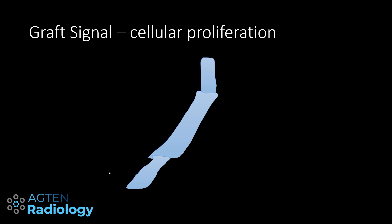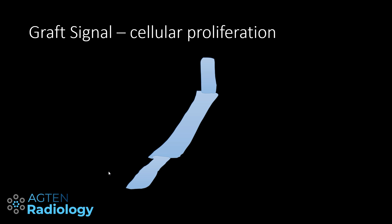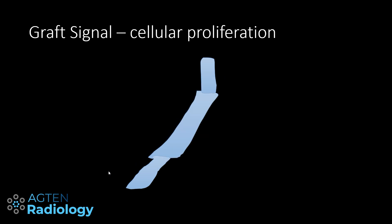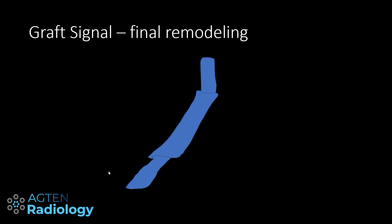After revascularization there is a phase of cellular proliferation where there are actually more cells within the graft than normal, which affects the signal of the graft, making it higher in intensity. Then during the final remodeling phase — the fourth phase — it goes back to normal and resembles the signal intensity of a normal ACL or has a similar signal intensity to the PCL when not injured.